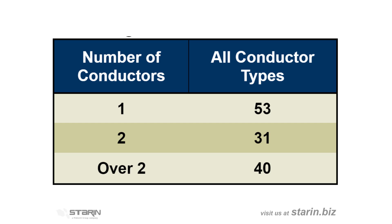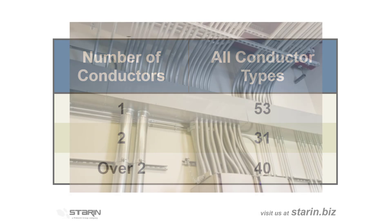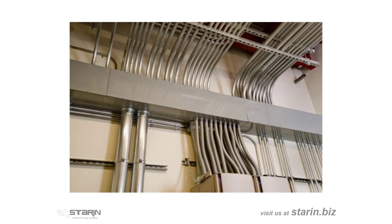Table 1 tells you that one wire can fill only 53% of a raceway, two wires can fill only 31%, and if you have more than two conductors in a raceway, the maximum fill is 40%. These rules pertain to any raceway, not just traditional conduit, so this is important in a lot of our work.